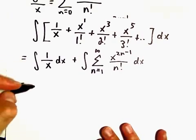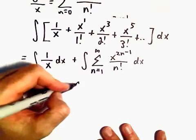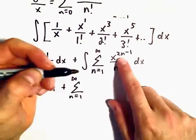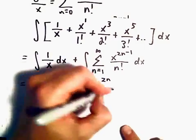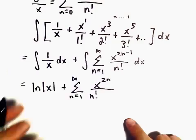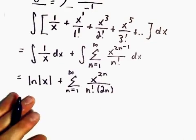When we integrate 1/x, we get the natural logarithm of x. Plus, when we integrate the series, we'll have n=1 to infinity. We'll add 1 to the exponent giving us x^(2n), with n factorial in the denominator. But don't forget, we have to also divide by 2n.